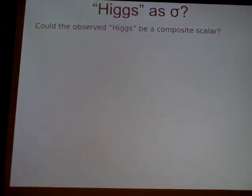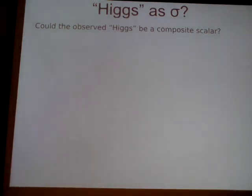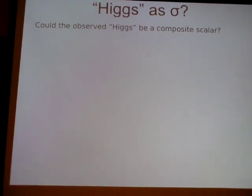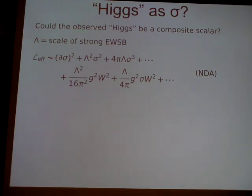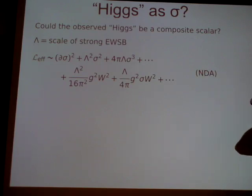I'm going to talk about various possibilities, starting with the Higgs as a sigma-like resonance. Could it just be an accident that the observed particle looks like the standard model Higgs — could it be some composite scalar? We assume there's some theory that breaks electroweak symmetry dynamically, like technicolor, and the Higgs is just a light composite that happens to be light. For theories like this, if we have some scale lambda — the scale of strong electroweak symmetry breaking — we can estimate terms in the Lagrangian using naive dimensional analysis.